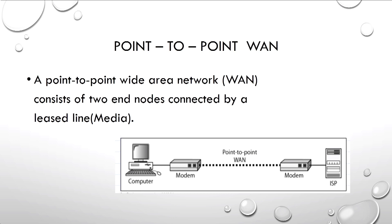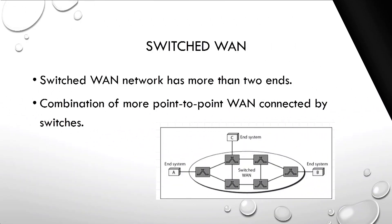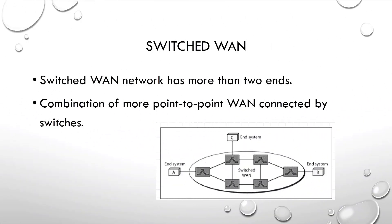The two end nodes are connected by a leased line. The leased line is a communication media — a cable which can be guided or unguided — through which data can be transferred from one node to another. This is called point-to-point WAN.